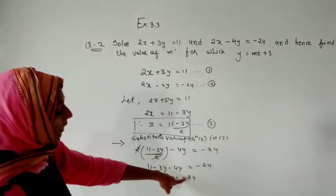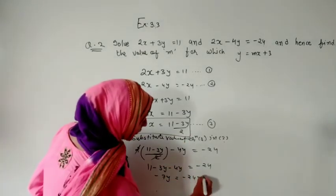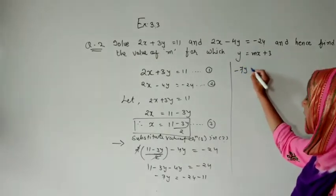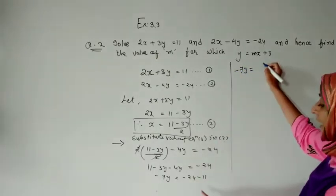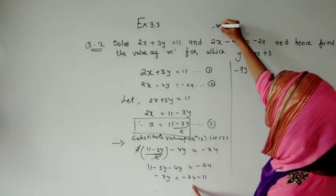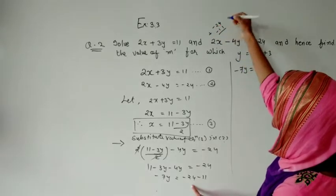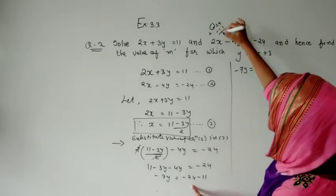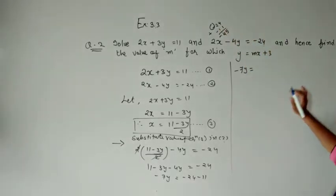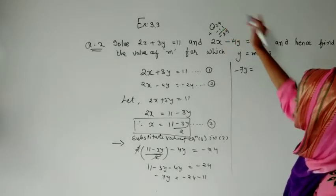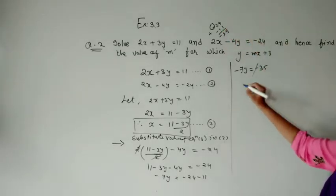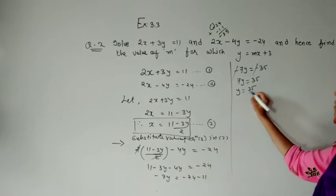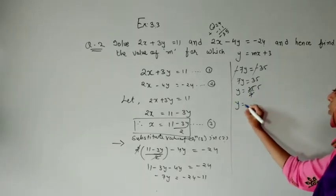Combining the y terms: 11 minus 7y equals minus 24. Shifting 11 to the other side gives minus 7y equals minus 24 minus 11. Since minus minus becomes plus, we get minus 7y equals minus 35. The negatives cancel, so 7y equals 35. Dividing by 7, the value of y is 5.